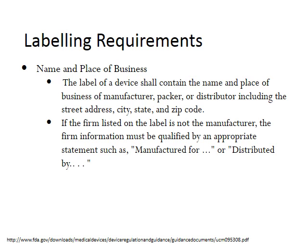According to FDA guidelines, the first thing that should be on the label is the name and place of business — the name and place of business of the manufacturer, packer, or distributor, including street address, city, state, and zip code. If the firm listed on the label is not the manufacturer, the firm information must be qualified by a statement such as 'manufactured for' or 'distributed by.'